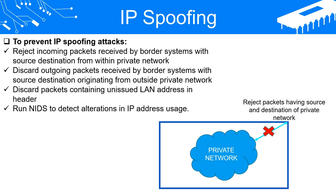The measures to prevent IP spoofing attacks consist of the following: reject all incoming packets received by border systems that possess a source address originating from within your private network, as this is an indication of IP spoofing; discard any outgoing packets that border systems receive with a source address originating from outside your private network, which can also be an indication of spoofing; if a LAN address is not officially issued to a valid system, discard any packets that contain it in their header; and run a NIDS that detects any alterations in the usage of an IP address.